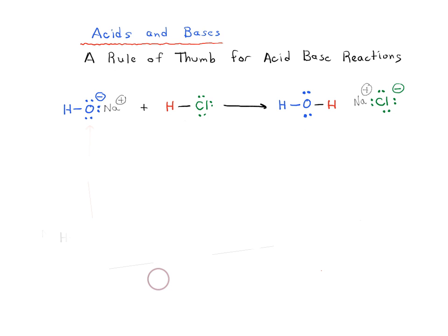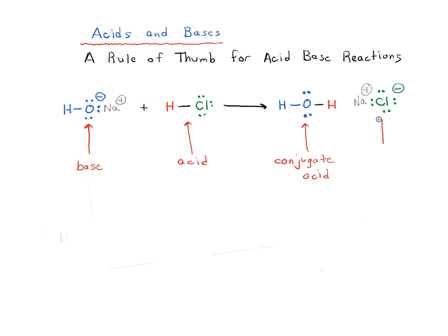In this video, we're going to go through a handy rule of thumb for acid-base reactions. If you looked at previous videos, you know that we talked before about the four different components of an acid-base reaction. We said that there's the base and there's the acid. What you get when your base adds a proton is the conjugate acid. And when your acid loses a proton, this is the conjugate base. So four components — that's your typical acid-base reaction.